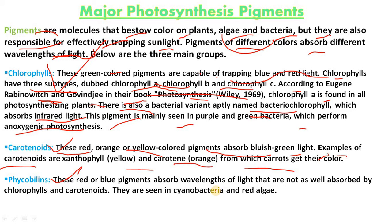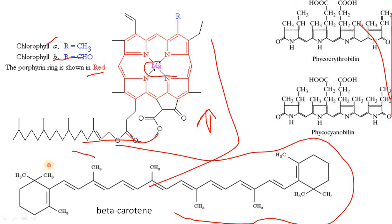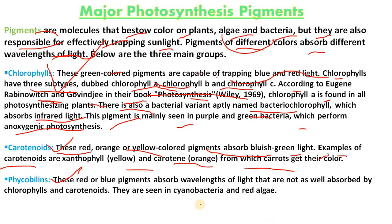The general molecular formula of carotene is C40H56, and the general molecular formula of xanthophyll is C40H56O2. Carotenoids absorb light energy and transform it to chlorophyll a. These pigments prevent photodynamic damage within the photosynthetic apparatus. The structural formula of beta-carotene is shown in the diagram.